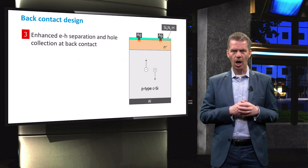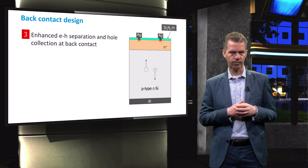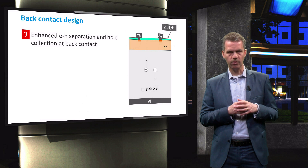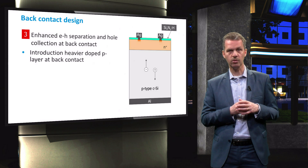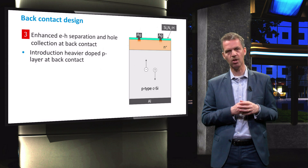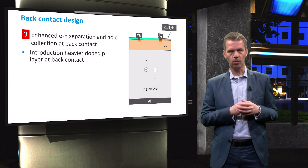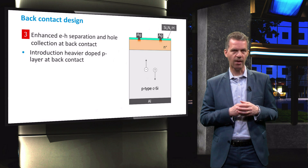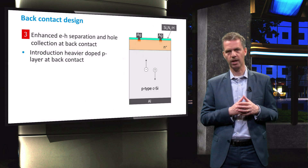In this situation, only a fraction of the electrons will reach the p-n junction and become collected. Some electrons will eventually recombine with a hole in the p-type wafer base. The solution to this is to introduce another electrostatic field by increasing the doping concentration near the back contact. This is called the back surface field, and this field repels electrons away from the back contact.